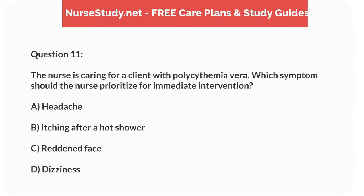Question 11. The nurse is caring for a client with polycythemia vera. Which symptom should the nurse prioritize for immediate intervention? A. Headache. B. Itching after a hot shower. C. Reddened face. D. Dizziness.